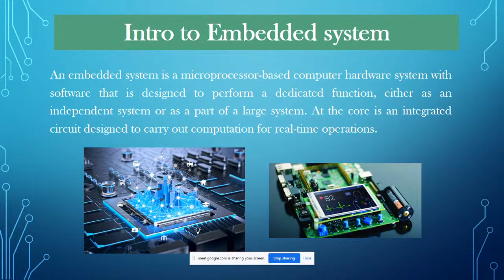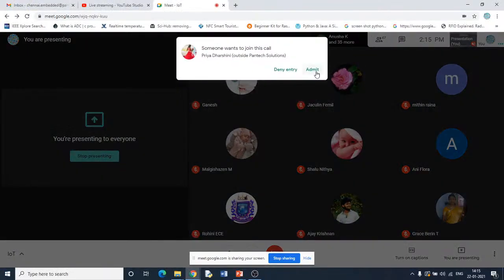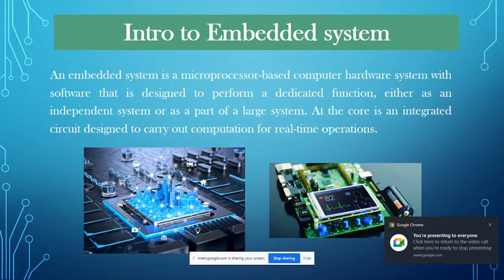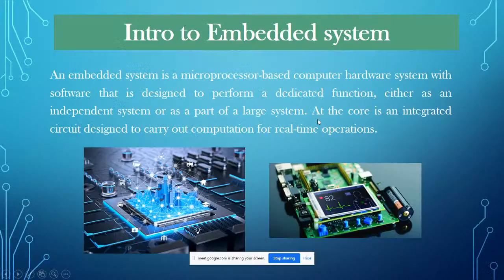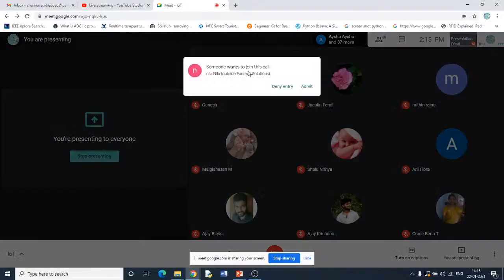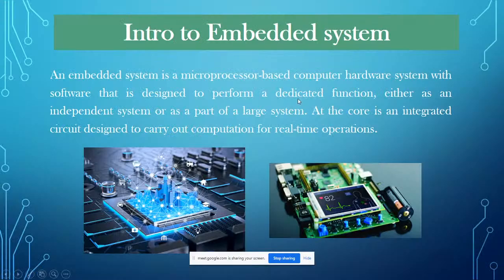For what purpose is an embedded system used? In embedded systems, we mainly use microprocessors, microcontrollers, DSP (Digital Signal Processing), and application-oriented embedded systems. There are also application-specific ICs, FPGAs, GPU technologies, and CPUs — different processors used in embedded systems.